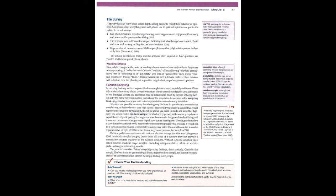Political pollsters sample voters in national election surveys just this way. Using some 1,500 randomly sampled people drawn from all areas of a country, they can provide a remarkably accurate snapshot of the nation's opinions. Without random sampling, also called random selection, large samples, including unrepresentative call-in or website polls, often give misleading results. The point to remember: before accepting survey findings, think critically. Consider the sample. The best basis for generalizing is from a representative sample. You cannot compensate for an unrepresentative sample by simply adding more people.